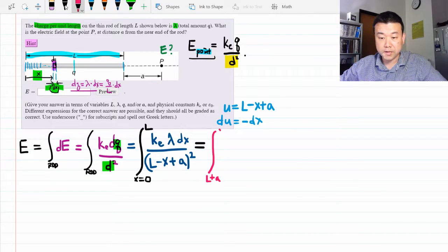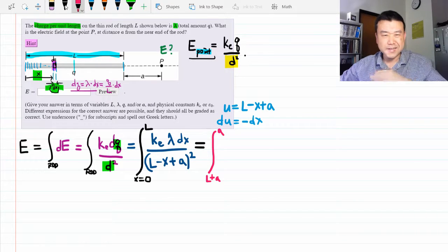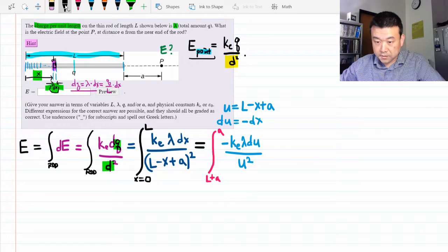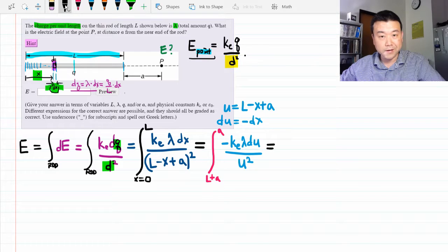That gives me U equals A as upper limit. The minus signs, they're all going to work out. All right, I got constant factors and the rest are just a polynomial integral. I think I know how to do that.